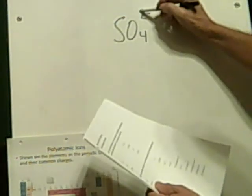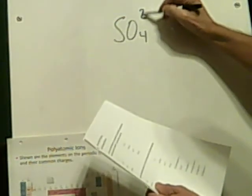SO4 — we already talked about that. I was going to write negative 2; they say 2 minus. It doesn't really matter where the plus or minus sign goes. So it's a negative 2 charge. According to the convention, they put the negative sign after the 2. That's a sulfate ion.